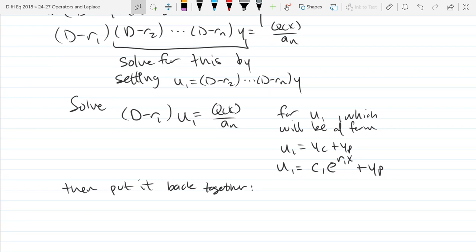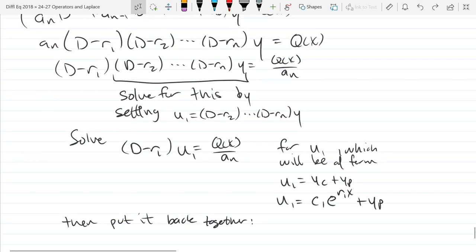Alright, so basically we're knocking out the first one, this D minus r1. So we're kind of knocking them out from the left, not from the right. So we're not going to basically solve for what I have circled at first, but we're actually solving for that, but we're not applying these derivative operators to y. What we're really solving for is to get rid of D minus r1. That's really the first one that we treat.